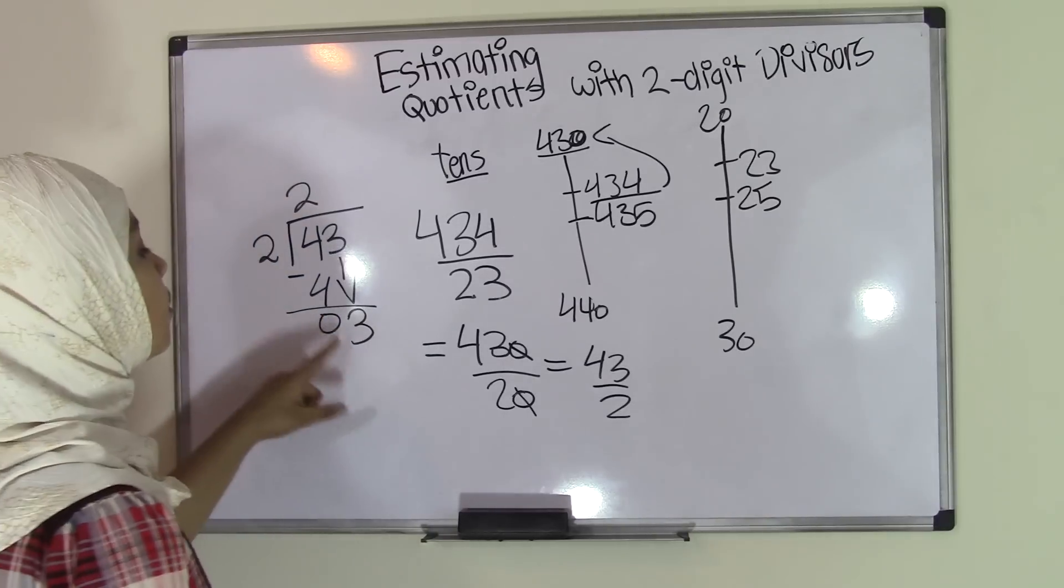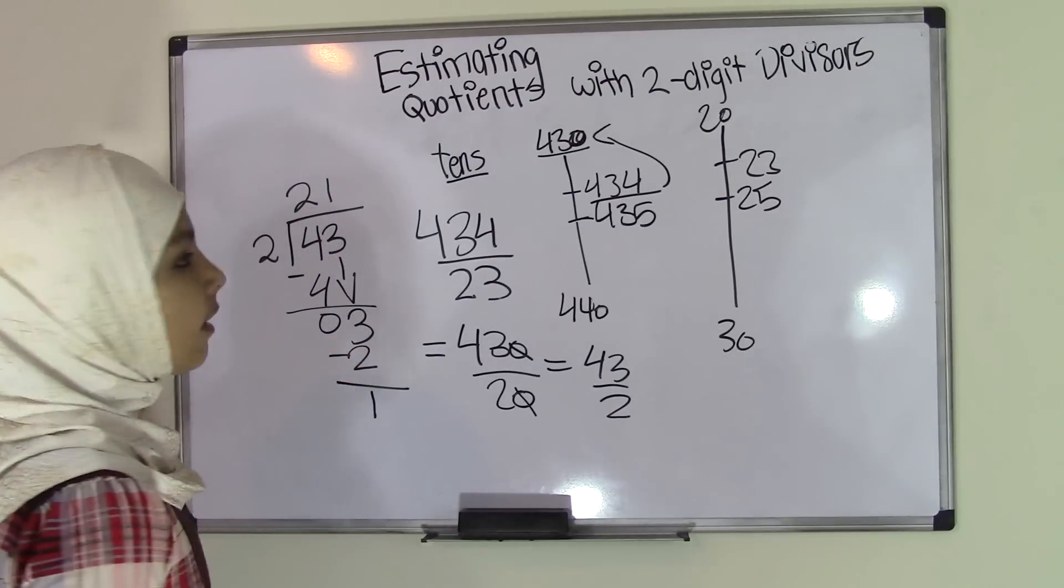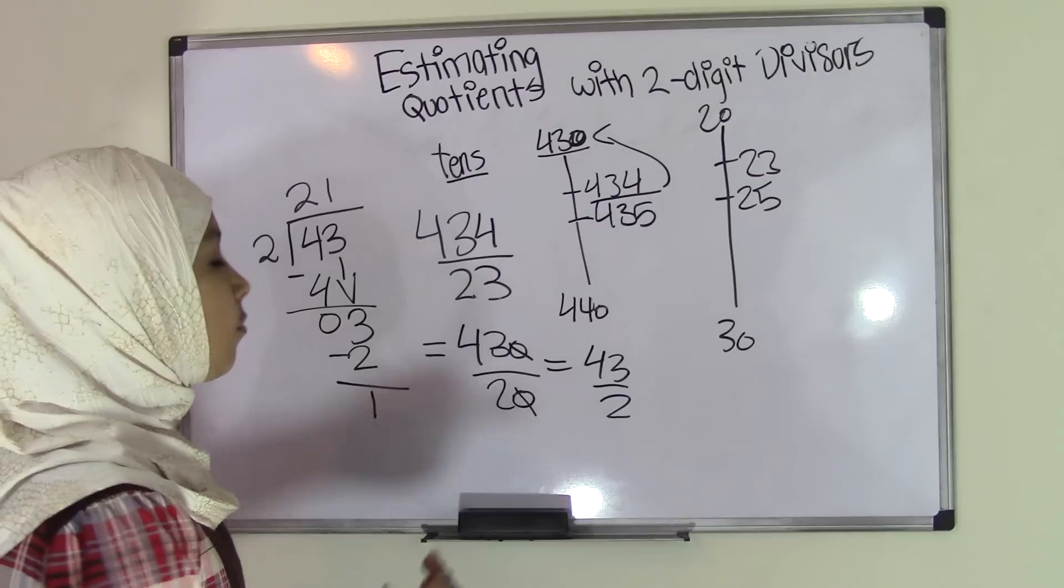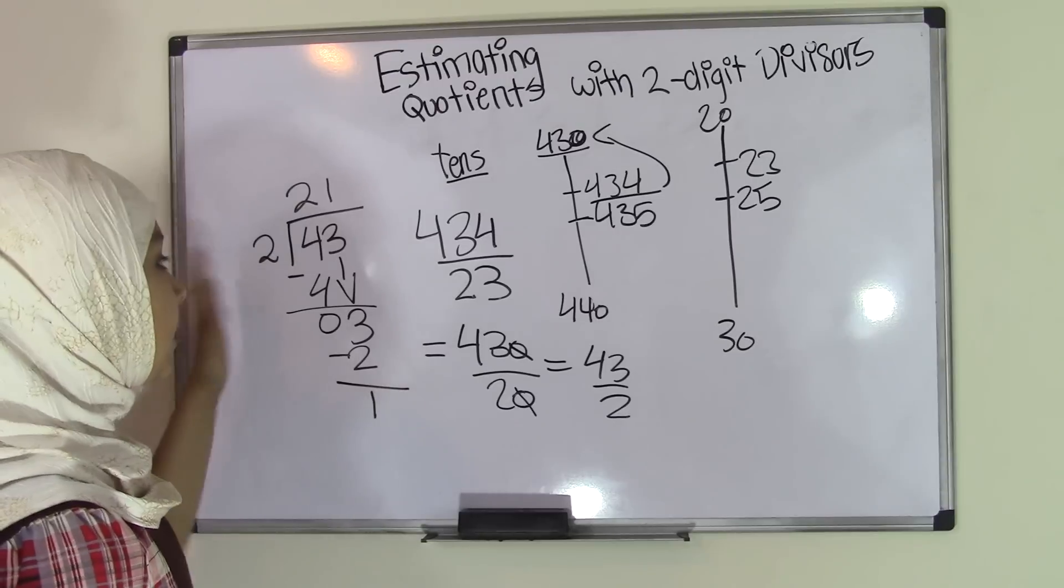How many times is 2 going into 3? 1 time because 2 times 1 is 2. Now we have 1 left. Now here we have an option whether we want to make this into decimals or we want to just leave this as it is.